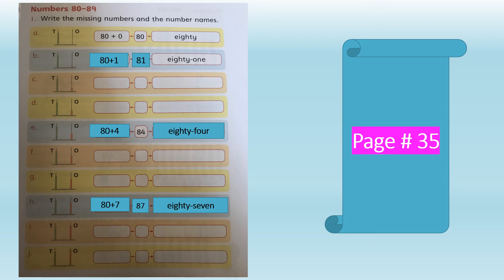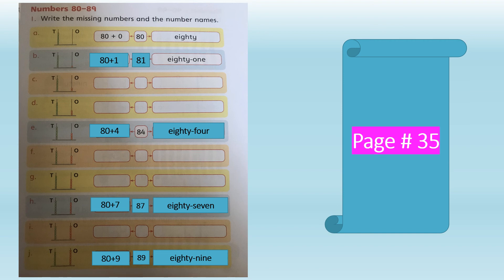In part J, it has 9 beads of ones on the ones rod and 8 beads of tens on the tens rod. 8 tens makes 80 and 9 ones makes 89. The number name is E-I-G-H-T-Y, hyphen or space, N-I-N-E — eighty-nine, 89.